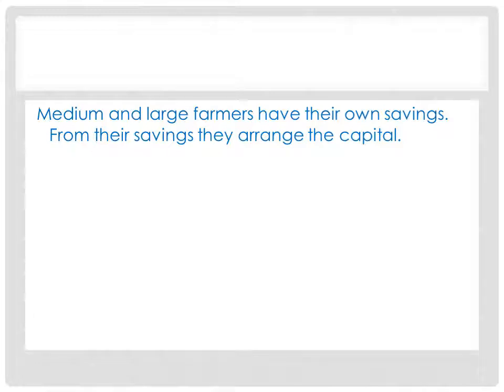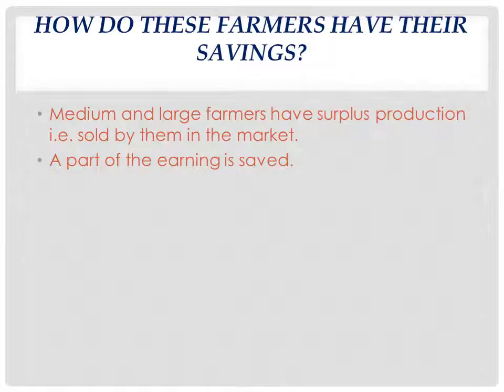Medium and large farmers have their own savings, and from their savings they arrange the capital or money needed. These farmers have large pieces of land, so they grow more crop production.